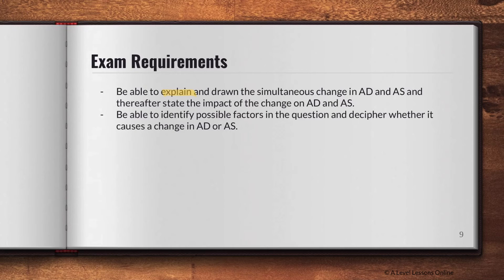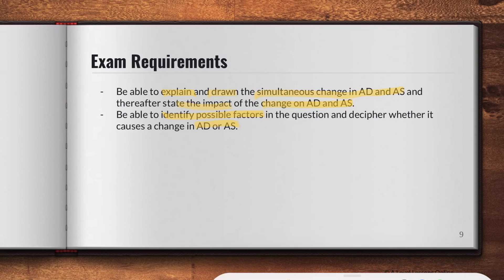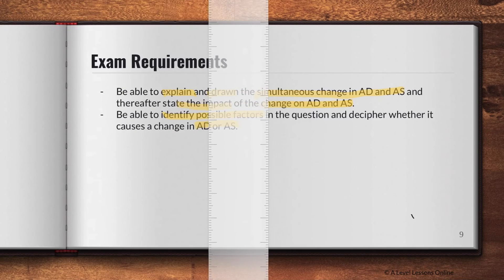Your exam requirements are straightforward: be able to explain and draw the simultaneous change in AD and AS, state the impact on real GDP and general price levels, and identify the possible factors in the question to determine whether they cause a change in AD, AS, or both. For instance, investments in technology can affect both — improving productive capacity in the long run — whereas other investments may only affect short-run AD or short-run AS. You need to identify exactly what is being described.